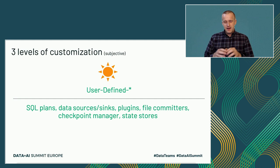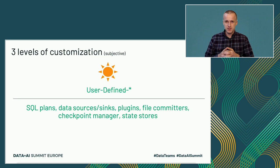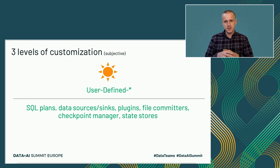The second layer requires a bit more knowledge about Apache Spark internals because your code will directly interact with it. In this part you will find components like SQL plans, so logical and physical rules, also data sources, data sinks, plugins which are one of the new features of Apache Spark 3 and also one of the topics of this year's Data and AI Summit. And finally, file committers, checkpoint managers, and state stores.